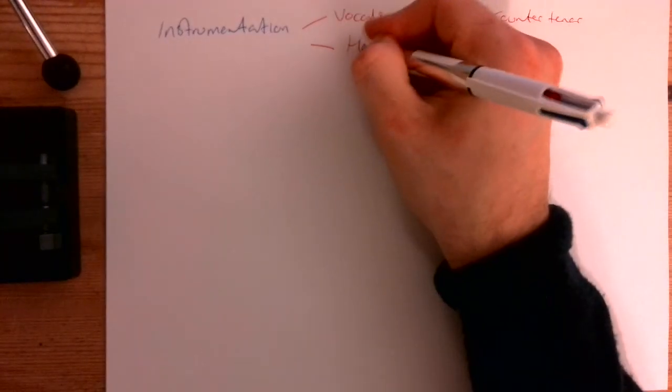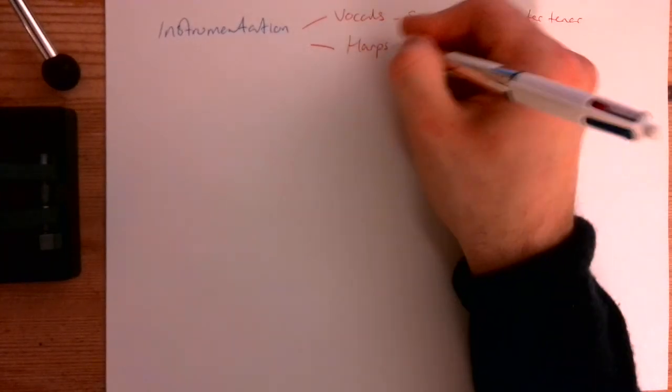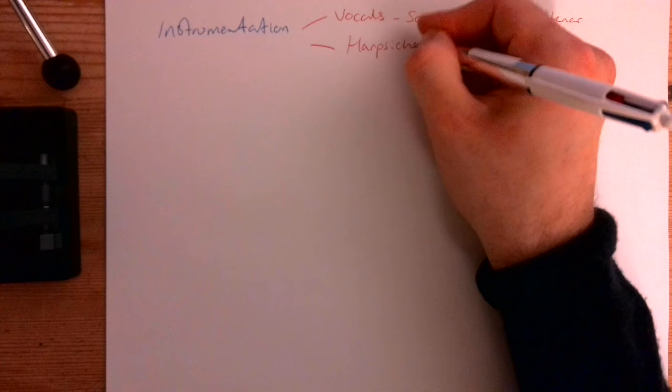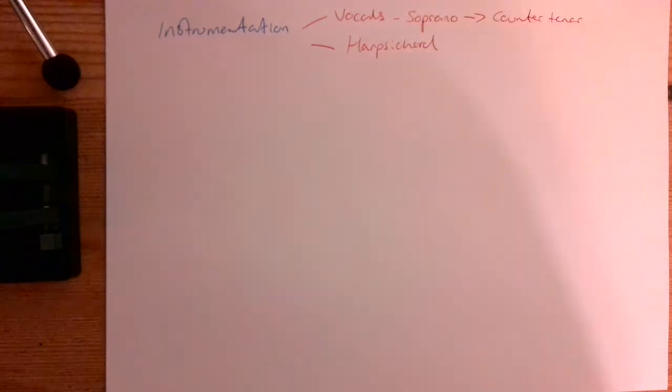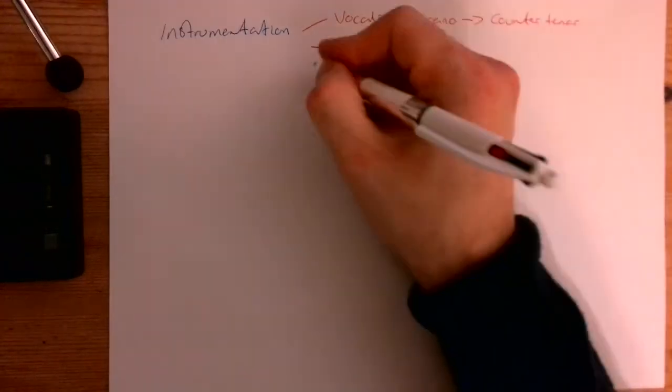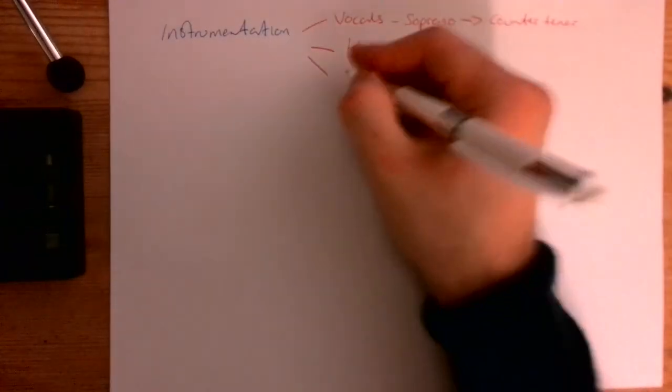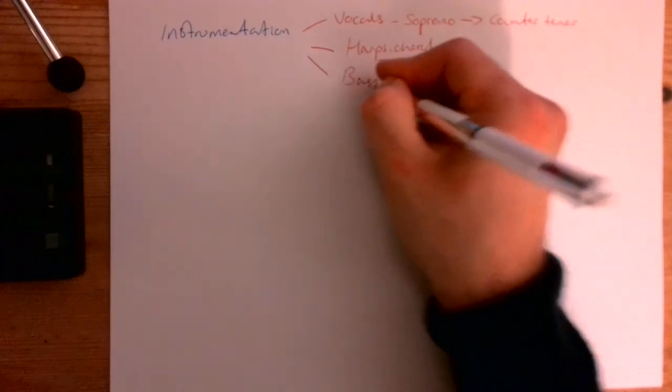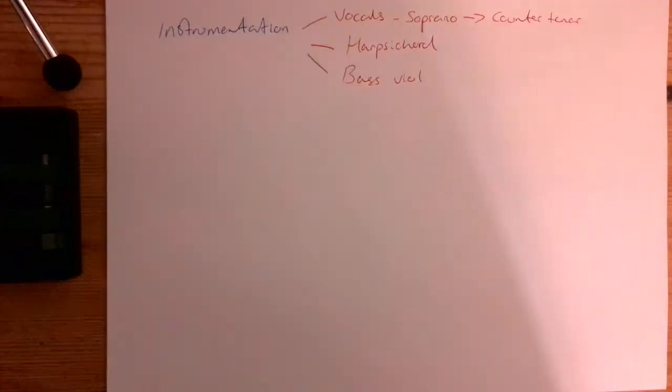You have the harpsichord, and this is the keyboard instrument that would have been used because, remember, he was a Baroque composer and this was the keyboard instrument they had at the same time as he was around, and then a bass viol, which is like an olden-day cello.